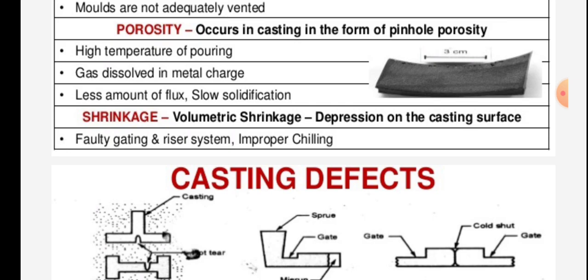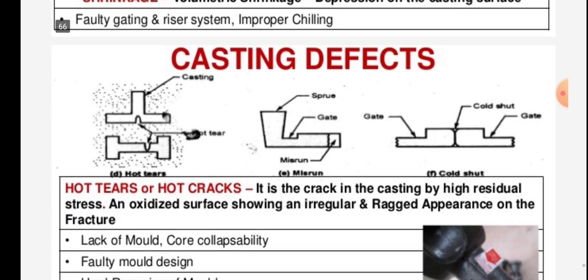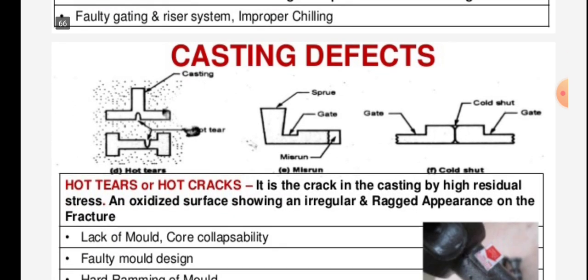Shrinkage causes volumetric shrinkage and depression on the casting surface. The causes include a faulty gating and riser system and improper chilling.